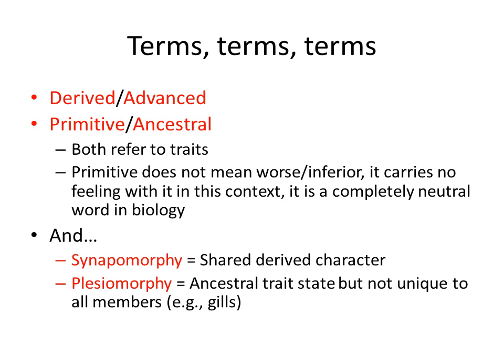The other two things we're going to use are synapomorphies, which are shared-derived characteristics — characteristics that we share with other members of the groups that we're related to. For instance, all primates have a five-fingered grasping hand. And then plesiomorphies, which are ancestral traits that are not unique to all members. For instance, in Sarcopterygians, gills are a really good example — some members have gills, some do not.